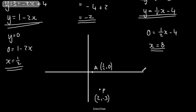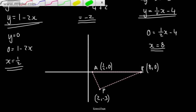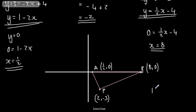Looking at the triangle, the base runs along the x-axis from A at x equals one half to B at x equals 8, giving a base length of 8 minus one half equals 7 and a half, or 15 over 2. The perpendicular height is the y-coordinate of P, which is 3. The area equals one half times base times height, so one half times 15 over 2 times 3, giving 45 over 4 units squared.